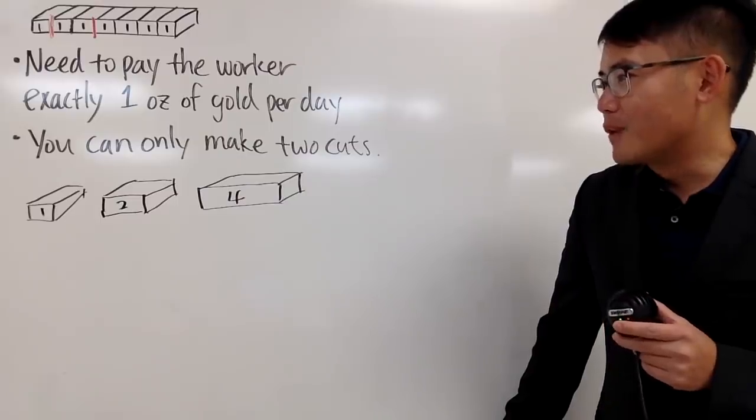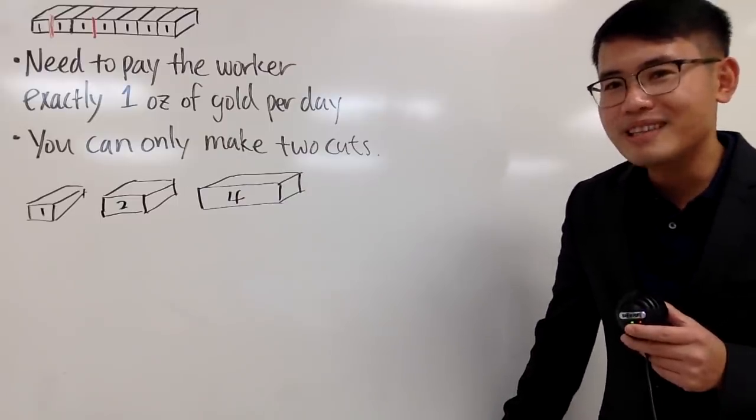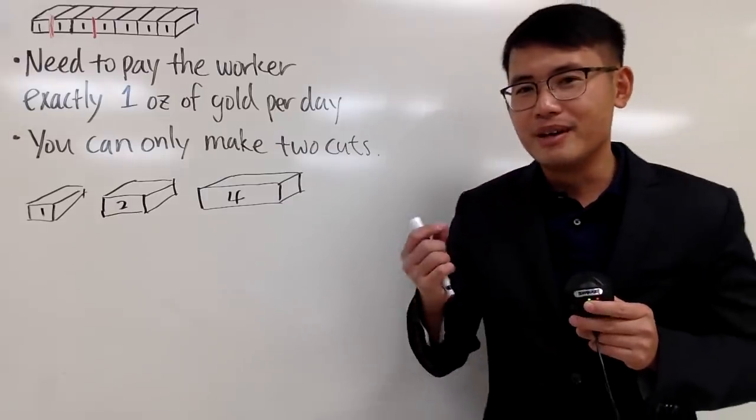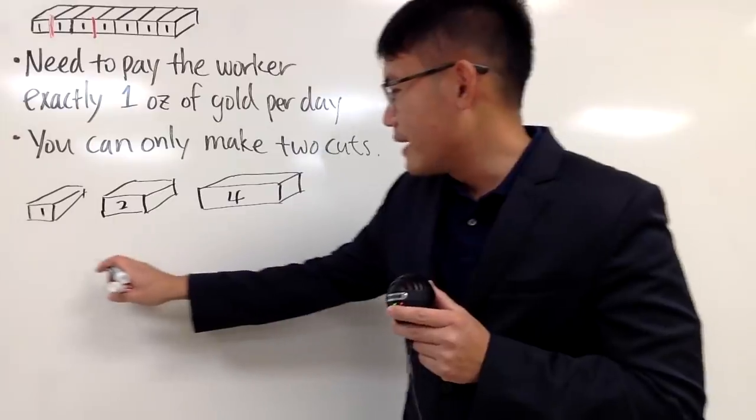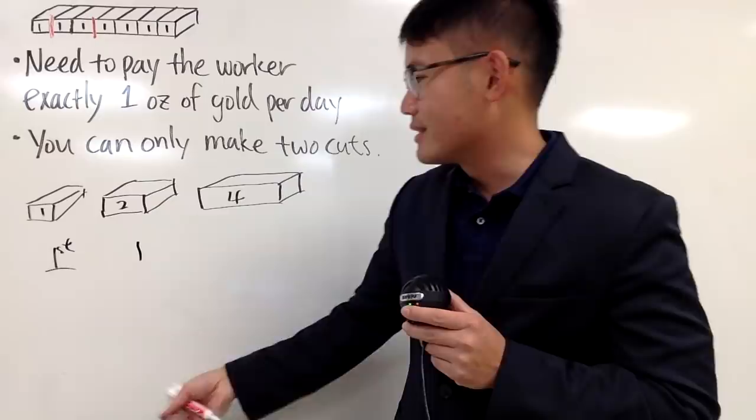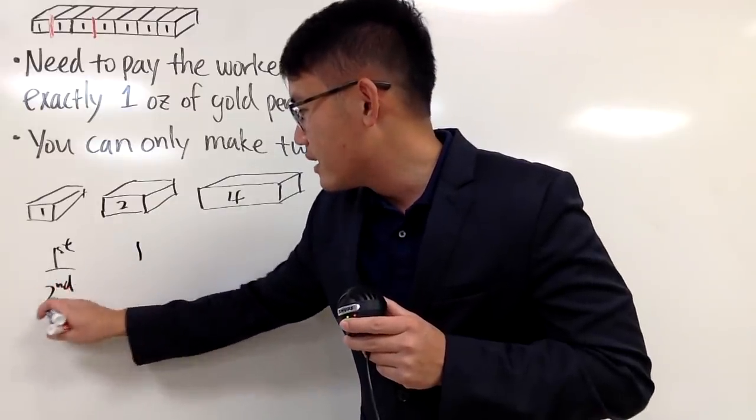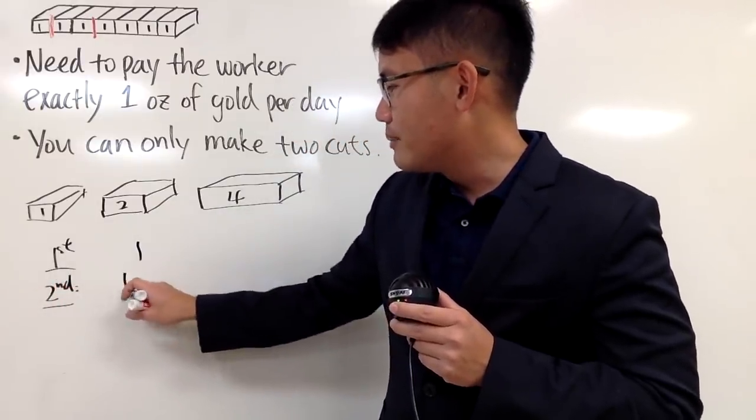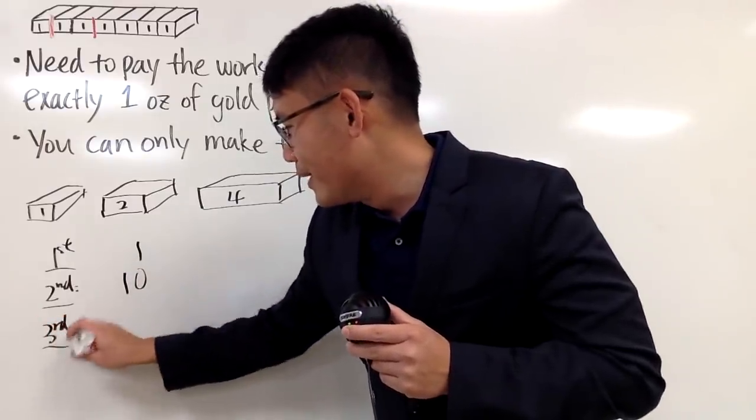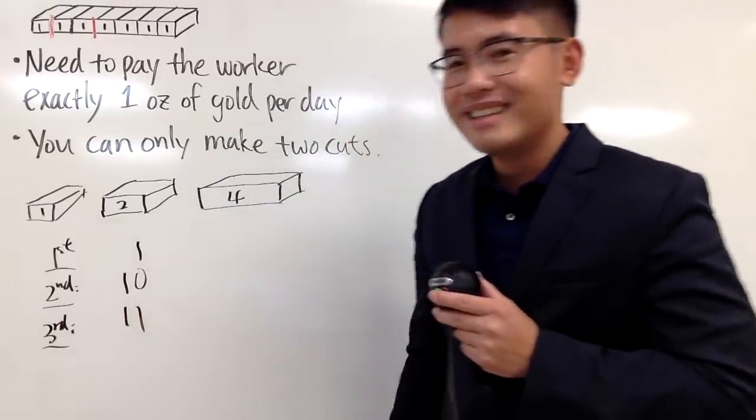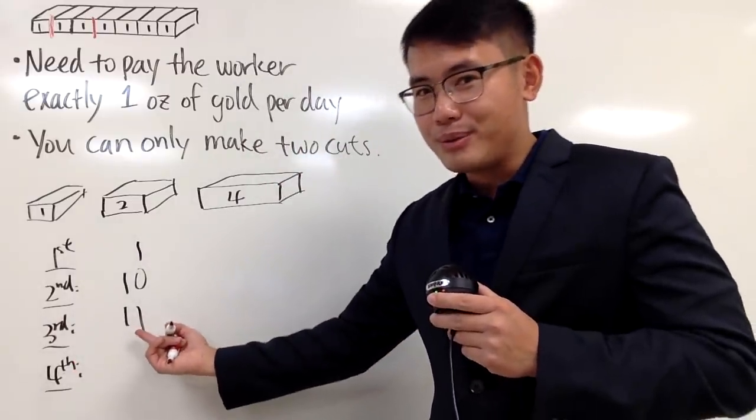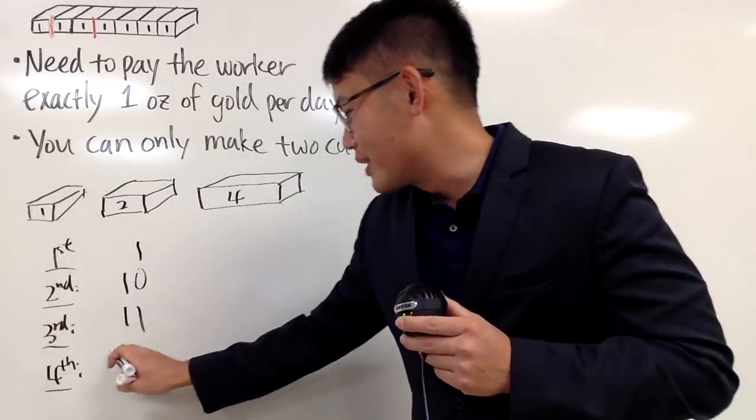And I think my friend was taking a computer science course. And the professor was using this to illustrate the concept of the binary numbers. So, for the first day, you are going to give the person, the worker, 1 oz. The second day is, you add 1 to it, but you have to minus 1 because you have to carry over. And then the third day, you are going to just add 1, so it's 1, 1. And then on the fourth day, what you are going to do is, you are going to add 1, but you have to get rid of this, so you get 1, 0, 0.